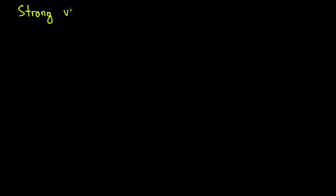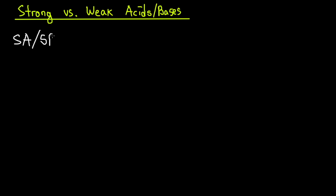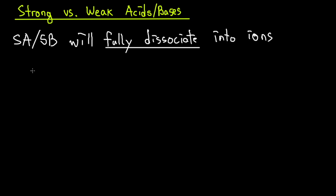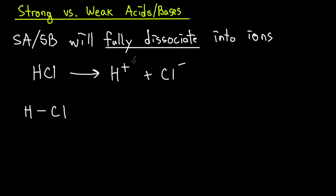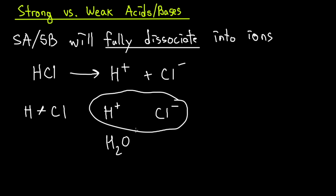The next notion to discuss is strong versus weak acids and bases. Strong acids or strong bases will fully dissociate into ions when dropped in an aqueous solution. For example, HCl is a strong acid — when dissolved in water it is fully split into H+ and Cl−. This full dissociation only occurs for strong acids and strong bases. Similarly, NaOH, which is a strong base, will fully dissociate into Na+ and OH−.